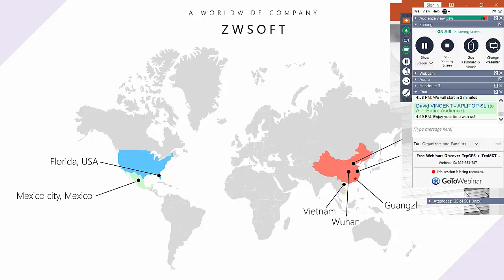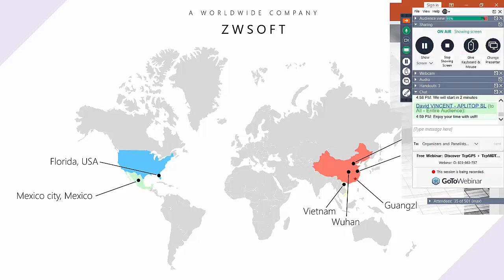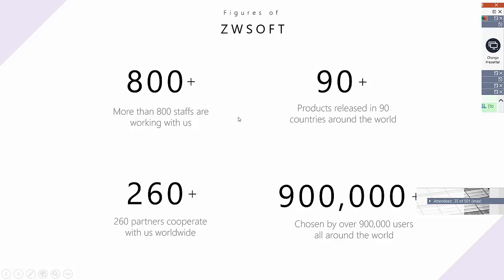Let me simply introduce our company. We are a company from China and our headquarters is in Guangzhou. We also have six other branch offices in the world, for example in the USA, Mexico, or Vietnam. We now have 800 staff working with us, our products are selling to over 90 countries, and we have 260 partners cooperating with us.